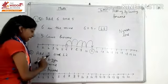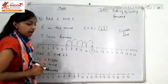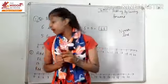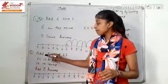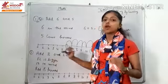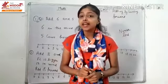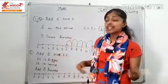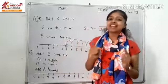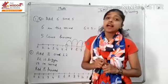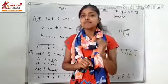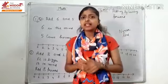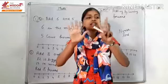Now do the second sum: add eight and twelve. Which one is greater? Eight or twelve? Yes, twelve. Twelve is greater. Keep it in mind. After that, how much to count? Eight. Count eight on fingers: one, two, three, four, five, six, seven, eight.